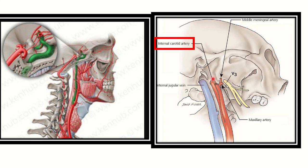In the second picture, we can see the internal carotid artery. It arises from the common carotid artery and passes through the carotid canal. On the other hand, the internal jugular vein passes through the jugular fossa.